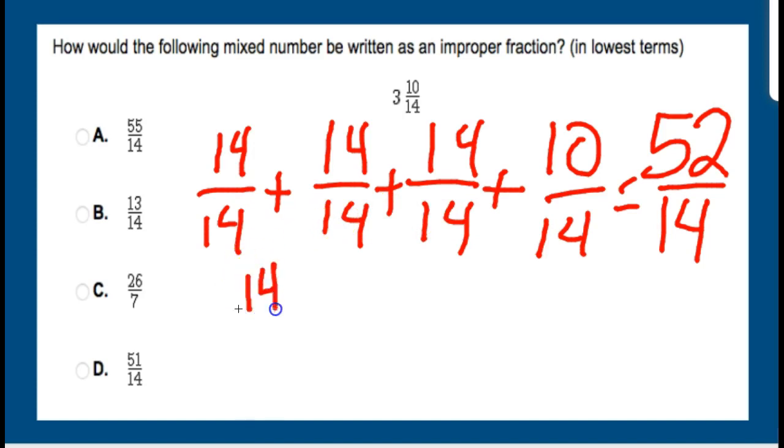And I know it's tempting to go ahead and just guess. Oh, it's one of those. It's closer to that one. Let's just go with this one. Don't do that. Don't let those tricky test makers trick you. We have 14 three times here, right? So that gets me 42. Then I add that 10, and that's how I get to the 52 over 14.